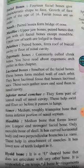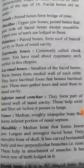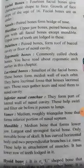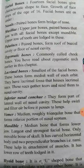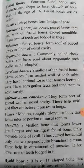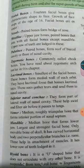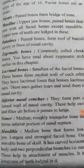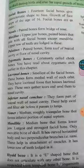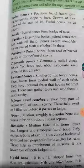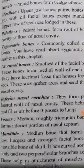The palatine bone is a paired bone that forms the roof of the buccal cavity and the floor of the nasal cavity. Next is the zygomatic bone, commonly called the cheek bone. We will also study the zygomatic arch in detail in this chapter.